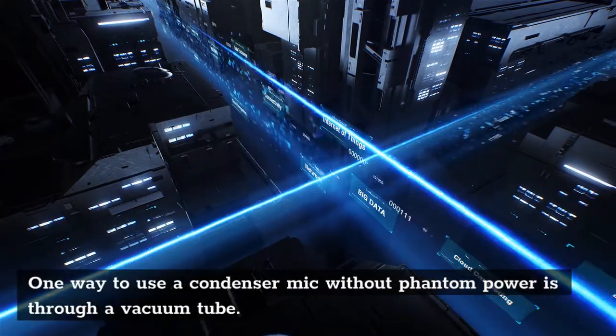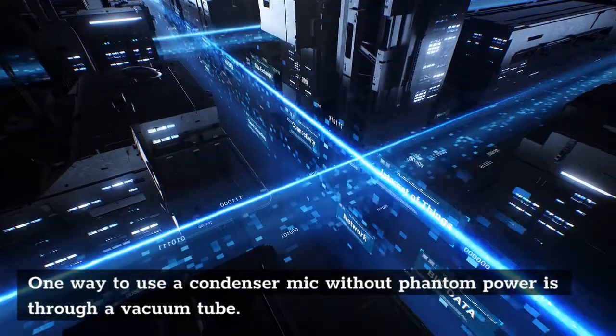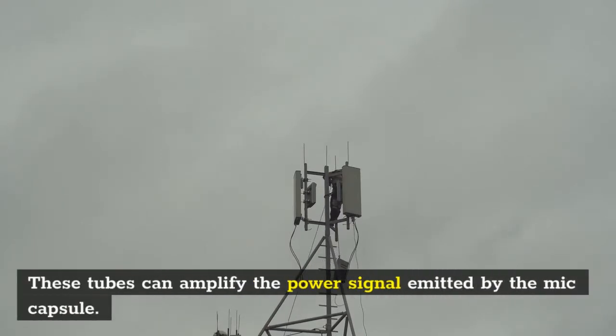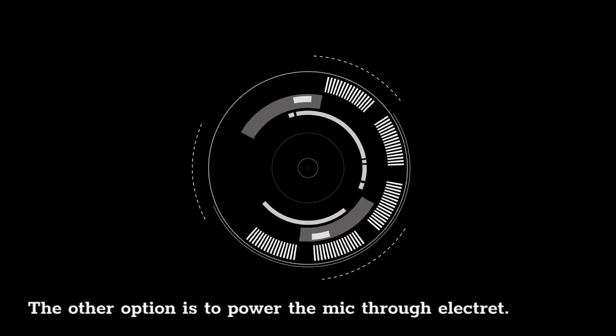One way to use a condenser mic without phantom power is through a vacuum tube. These tubes can amplify the power signal emitted by the mic capsule. The other option is to power the mic through electric.